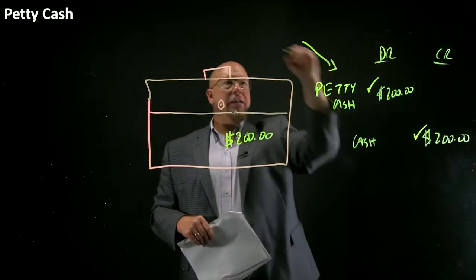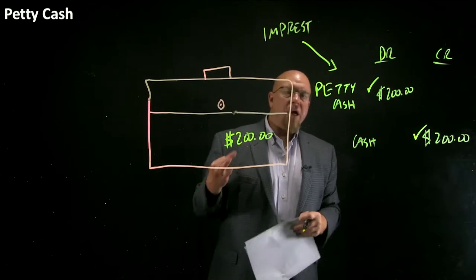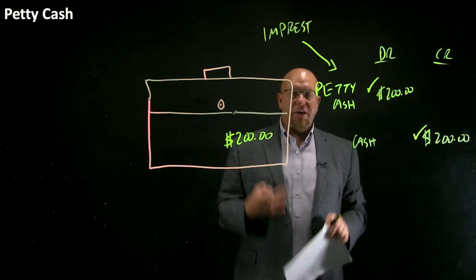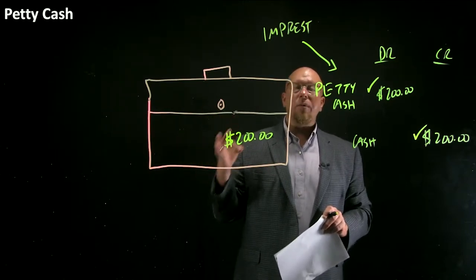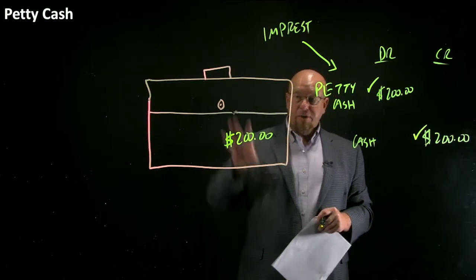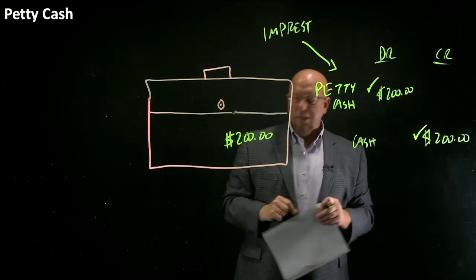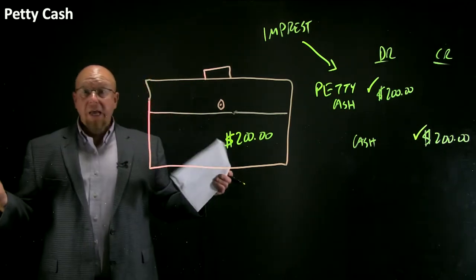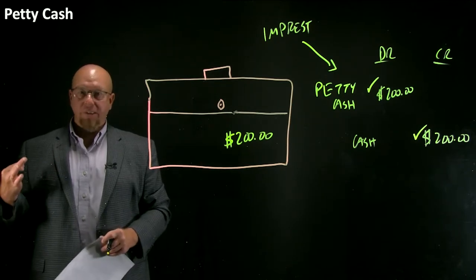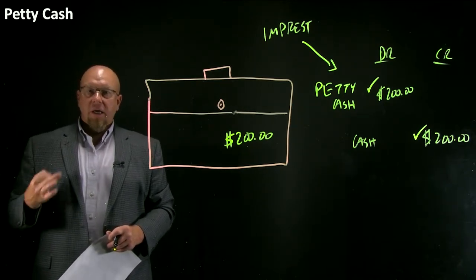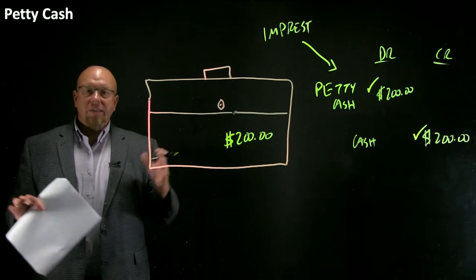Petty cash is what's called an imprest account balance. On our balance sheet and trial balance, this account will always have a $200 debit balance, even if the box is empty — and you'll see this because of the way we record the transactions. Yes, that's inaccurate — if the box has nothing in it but a bunch of receipts, our balance sheet still reports $200. But it's also not material, so it really doesn't matter. It would not influence the informed decisions of a decision maker, and sometimes convenience is a factor here.